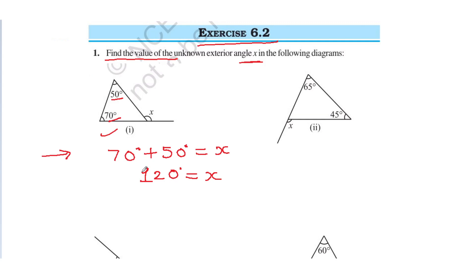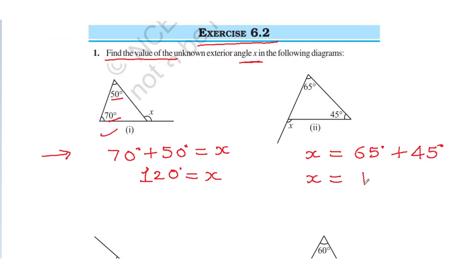Now here also, similarly, x is equal to the addition of two angles: 65 degrees plus 45 degrees. So what will x be? 65 and 45 — the answer is 110 degrees.